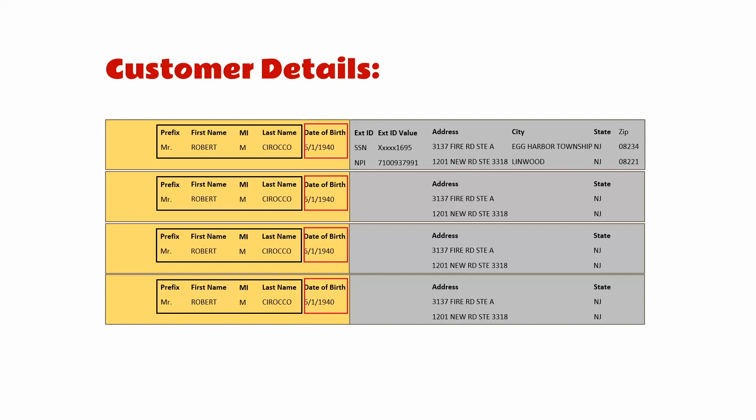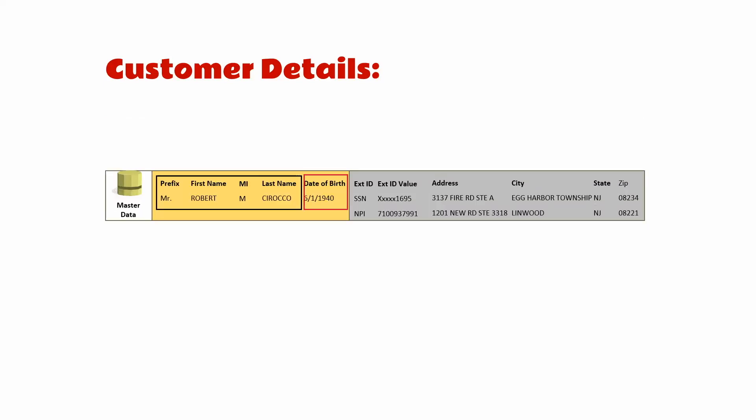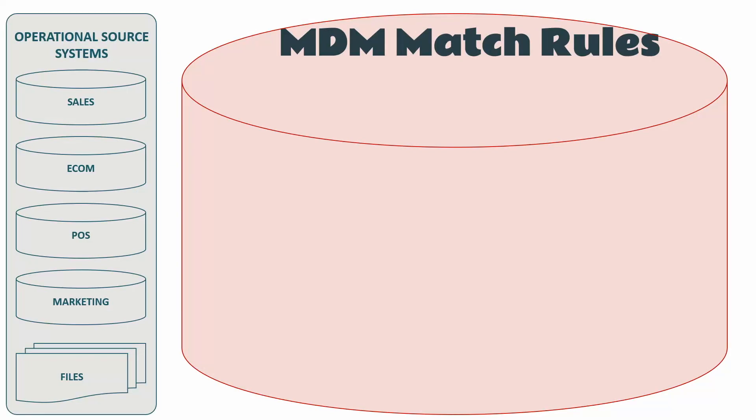In a nutshell, when I search for a customer by name Robert M. Siraco, I should get just one record. That one record is what we call master data — that is the exact outcome. If the same person appears in four different places in my system, it must be consolidated to deliver a single best version of truth. That's what we call master data.